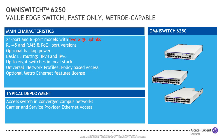We also have a FastE-only switch, the OmniSwitch 6250. It has a lot of the same features as the 6450 but without the speeds and throughput. We see less and less demand for switches like this, but it rounds out the portfolio, and every once in a while there is a requirement for this kind of lower-speed access switch.